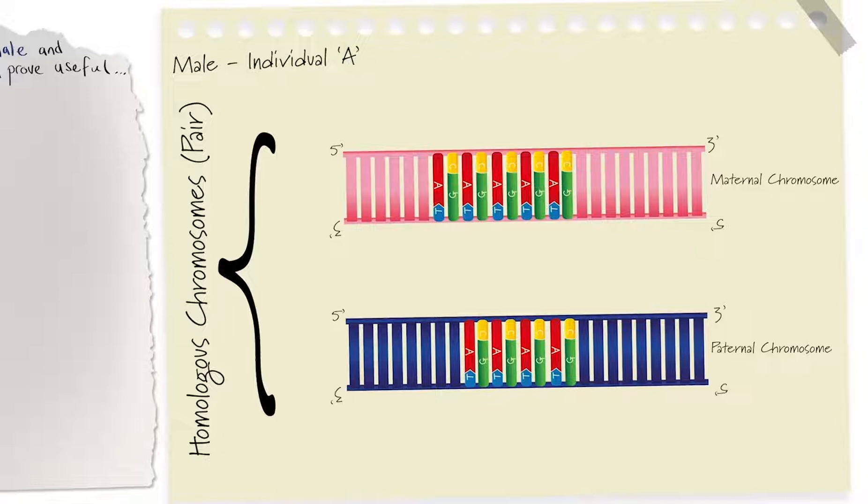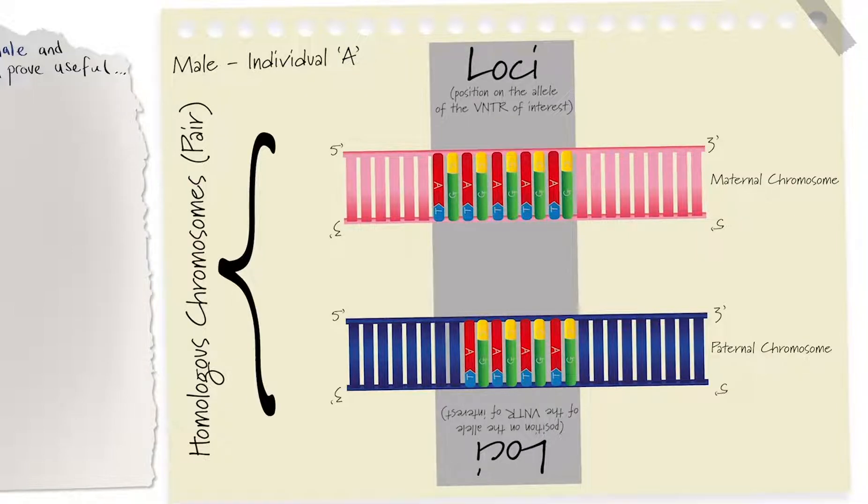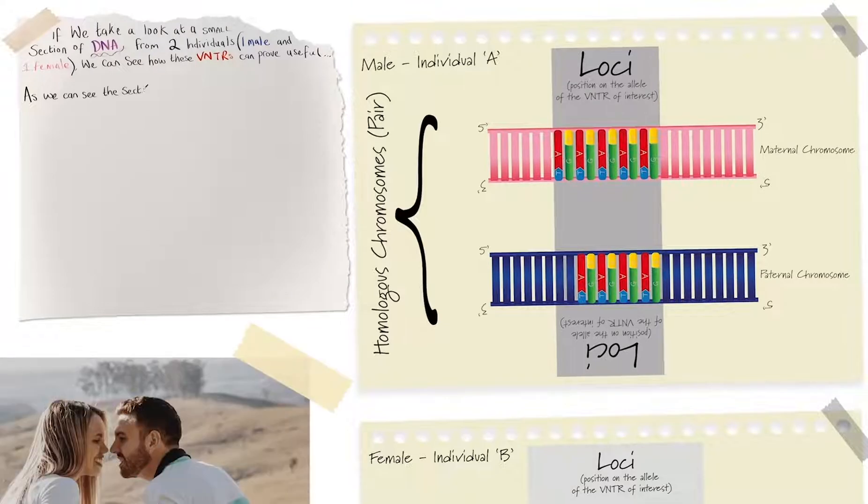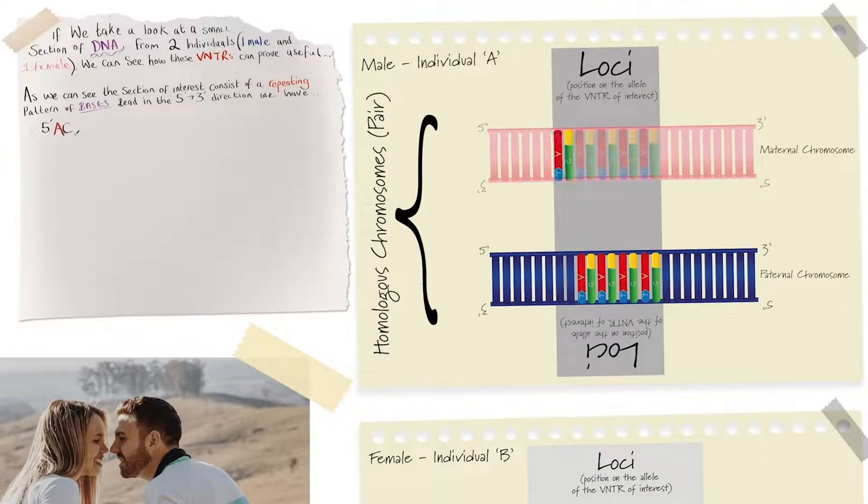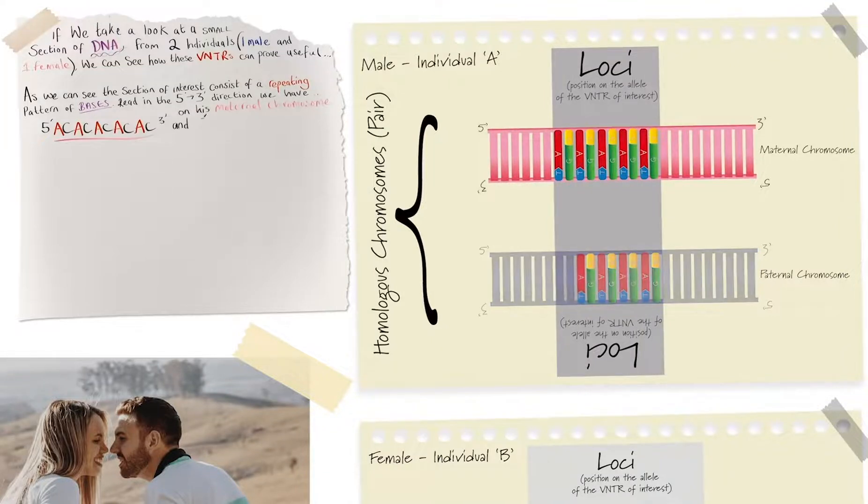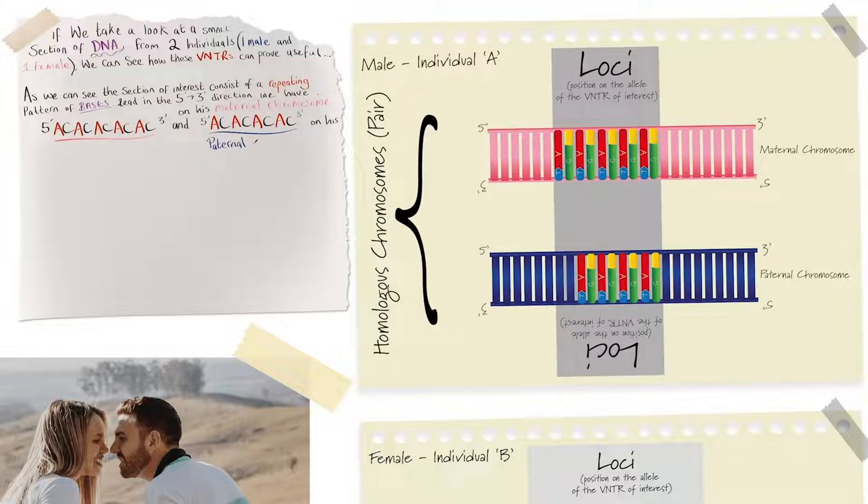The region of DNA that we are interested in is indicated by the coloured section of base pairs. This is the loci, the position of the VNTRs that we are going to analyse. As we can see, the section of interest consists of a repeating pattern of bases, read in the 5 to 3 direction, we have AC, AC, AC, AC, and AC on his maternal chromosome. And we have AC, AC, AC, AC on his paternal chromosome.